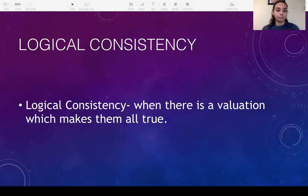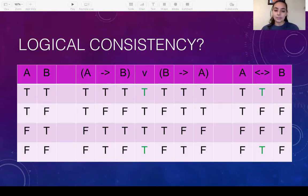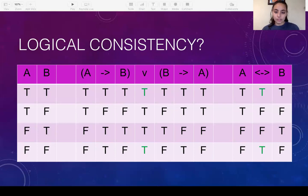So what about logical consistency? This is when there is an evaluation which makes all of the sentences true at the same time — both sentences true going across a row horizontally, or all three sentences if there are three. You just have to find at least one row where that is the case. In this question there are two rows where both sentences are true, so our answer would be: there is an instance of logical consistency in the first and fourth rows.